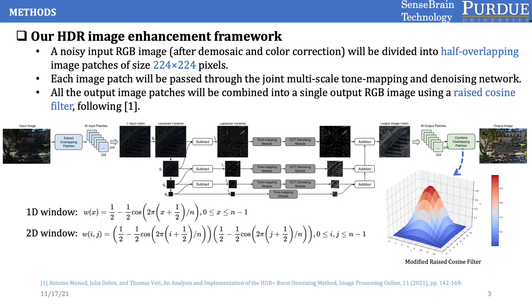Note that for the base layer, which is the one with the smallest size, we don't use a denoising module. Since most of the high-frequency noise has been separated into the upper layers in the Laplacian pyramid, we think that denoising at the base layer would not be necessary. After the layer-wise tone mapping and denoising, we then reconstruct the output image patches from the full output Laplacian layers. Finally, we combine all the overlapping patches to form a final output image, using a raised cosine window to smooth out the overlapping regions of all the neighboring patches to produce a more naturally-looking final output.